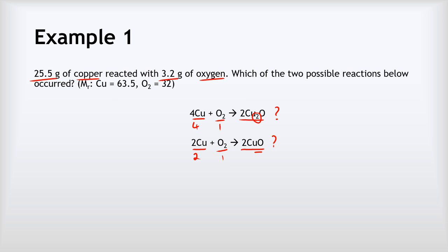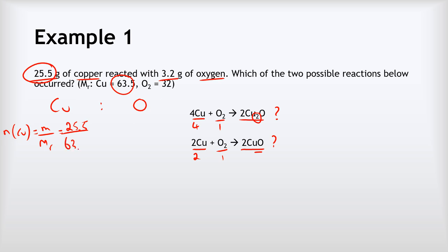Let's work out that ratio. We want ratios in terms of moles, so we need to find the number of moles of each substance. The number of moles of copper equals mass divided by relative formula mass: 25.5 divided by 63.5, which gives an answer of 0.4 moles of copper.